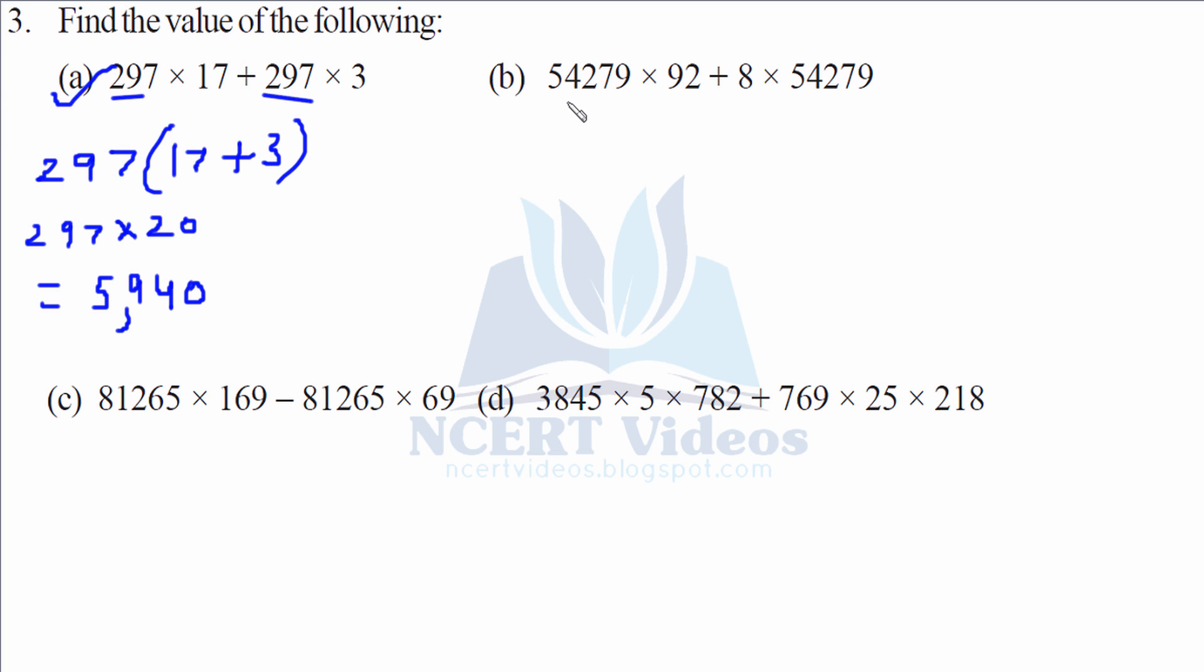Here again, 54,279 is common. 92 plus 8 would give you 100. So we will write 54279 into 100. Bracket sign denotes multiplication. So it is 54279 adding 00 at the last. It's your wish to change them into Indian form or international form.